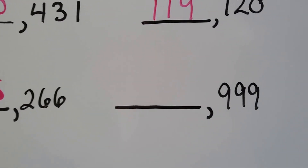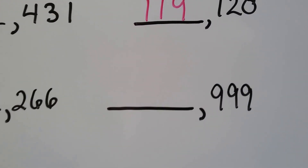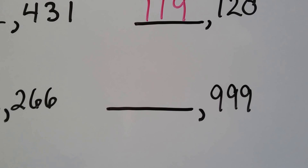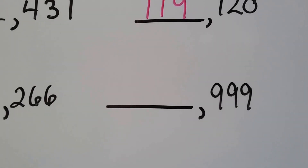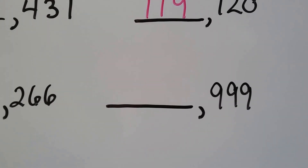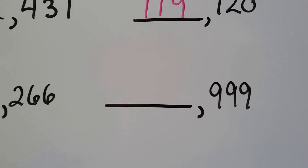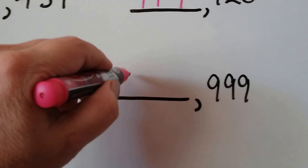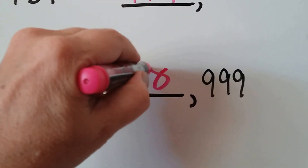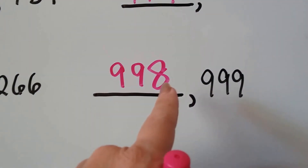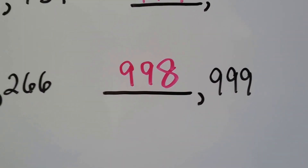What comes before 999? What's the number that comes before it when we're counting? It would be one less, wouldn't it? If you said 998, you're right. That's one less than 999.